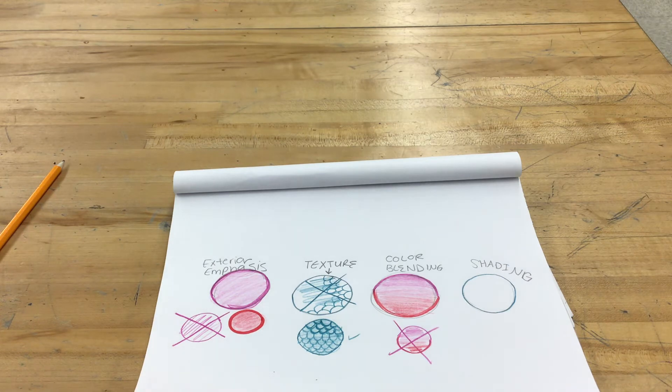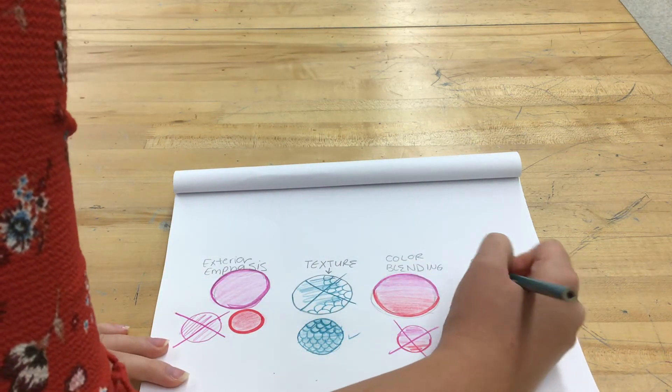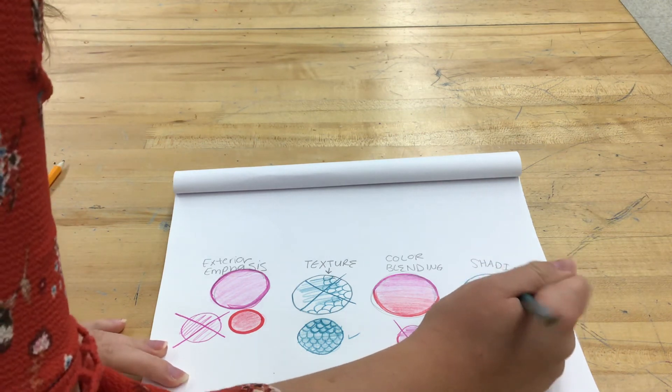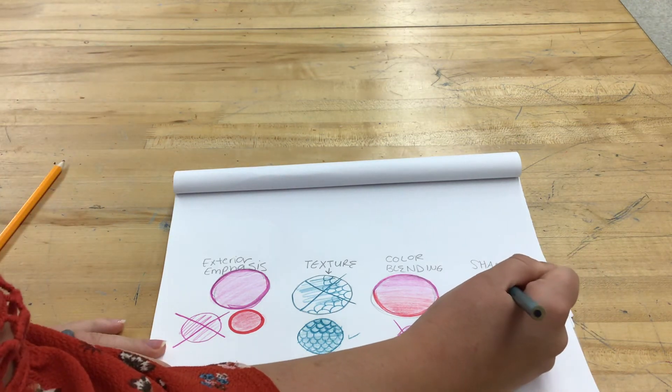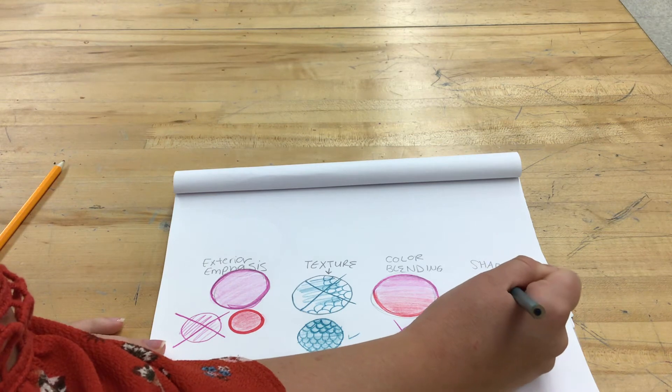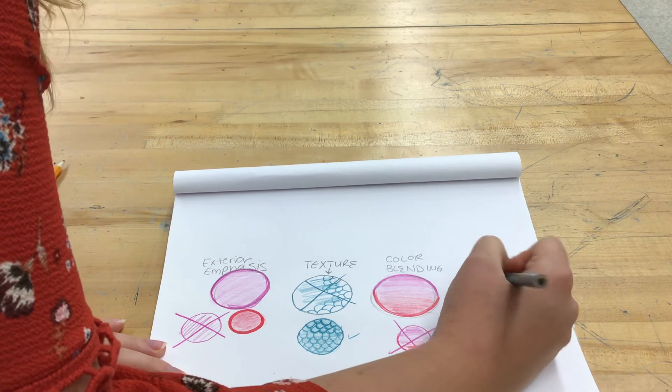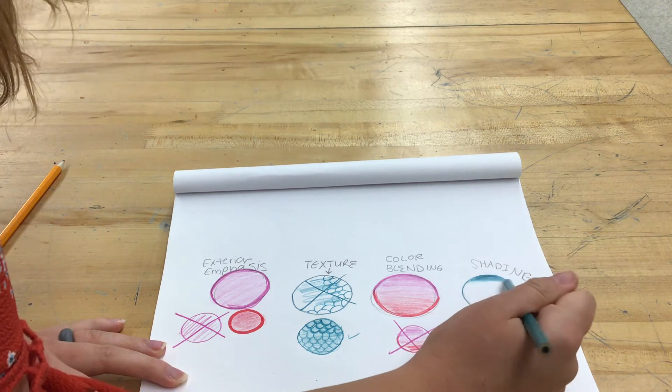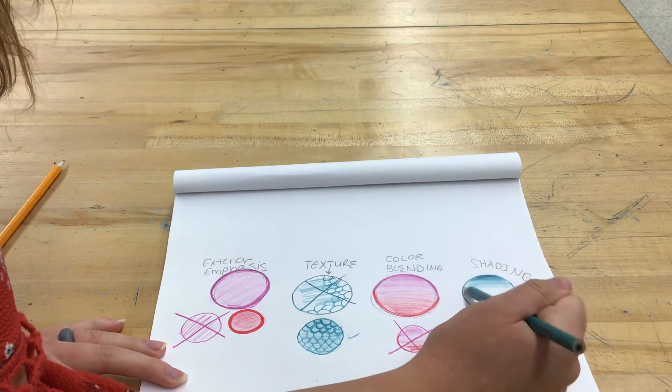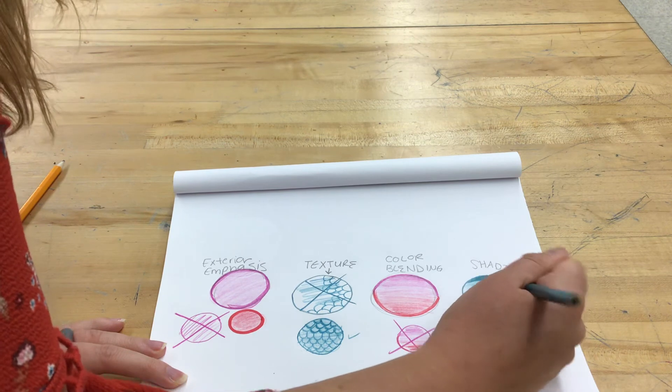For shading, we learned about value scales. So, we are going to incorporate that into our shading box. So, I am going to shade the top of my circle, the darkest value, and move all the way down to the lightest value. And I am going all the way across, putting more pressure on my pencil at the top. And slowly making my way down. I might have to go back up and even add more layers at that top part.